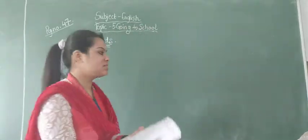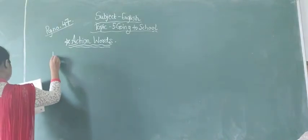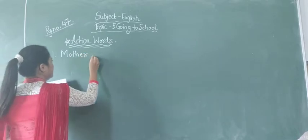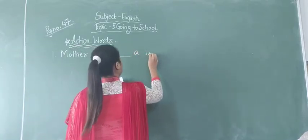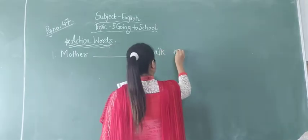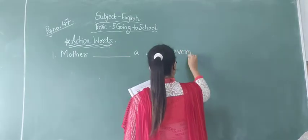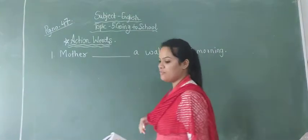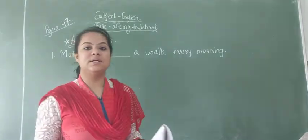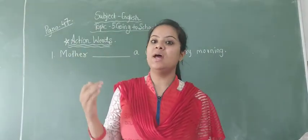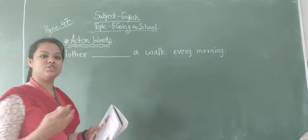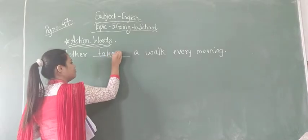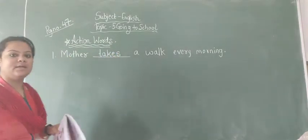Okay students, let's see sentence number one. It says: 'Mother blank a walk every morning.' Mother takes a walk every morning — so every day mother takes a walk. The action word here is 'takes'. You have to write the spelling T-A-K-E-S, takes.